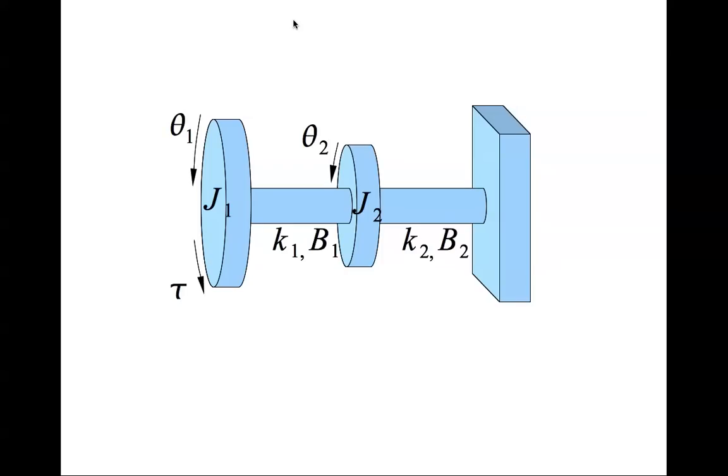In this lecture we'll continue with our examples of modeling dynamic systems and then simulating them with Simulink. Here we are looking at a slightly more complicated example, this is a two degree of freedom system, it's also a rotational system.